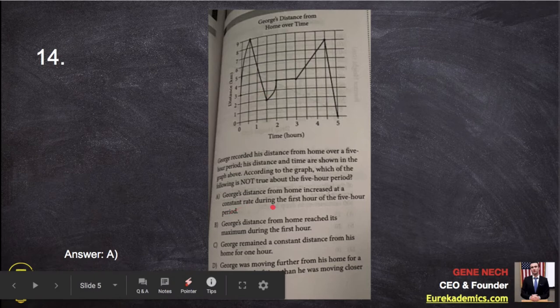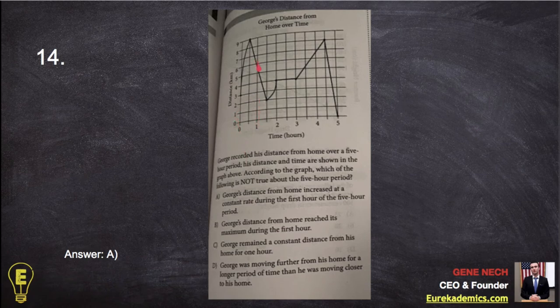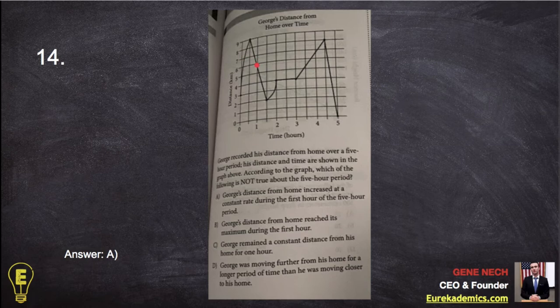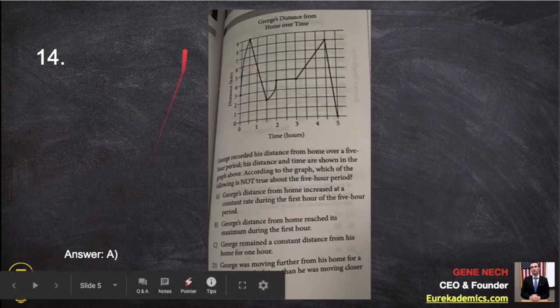So let's look at number one. George's distance from home increased at a constant rate during the first hour of the five-hour period. Well, he was going away from home and then closer to home. Does that sound like George's distance from his home increased at a constant rate? That's false. So answer A right away.